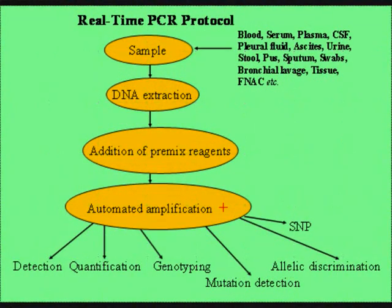Protocol of real-time PCR: The given sample is taken, DNA is extracted, pre-mixture reagent is added, and automated amplification is done for detection, quantification, genotyping analysis, mutation detection, allelic discrimination, and SNP analysis.